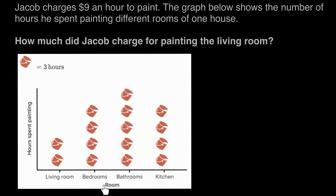Here's the graph — this is a picture graph, or pictograph, and it shows us how much time Jacob spent painting different rooms of a house. One super important thing is this little key right here that tells us each of these paint buckets is three hours of time.